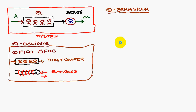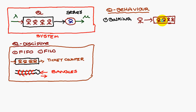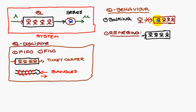Similarly, we come across queue behavior. Consider a queue in a hospital — one, two, three, four patients are waiting, and a new patient does not enter the queue and just walks away. That is called balking. Next is reneging: a person waits in a cinema theater ticket queue for half an hour and, due to impatience, quits the queue. That is called reneging.